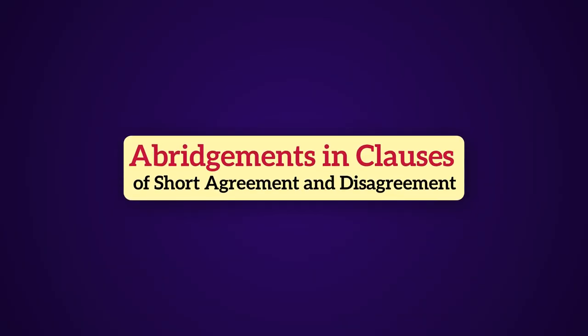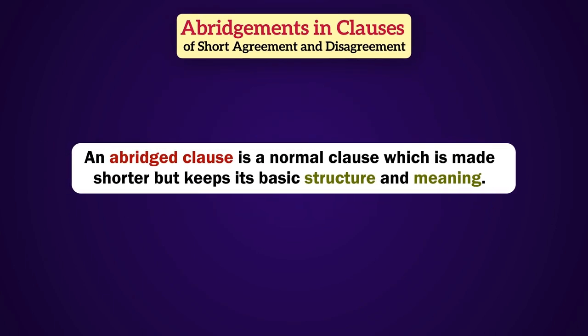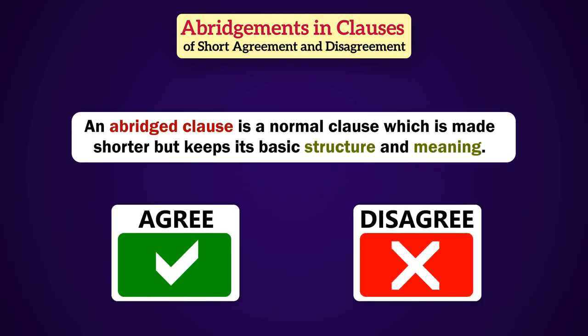What are abridgments in clauses of short agreement and disagreement? Well, an abridged clause is a normal clause which is made shorter but keeps its basic structure and meaning. And sometimes the purpose of abridgment is to agree or disagree.